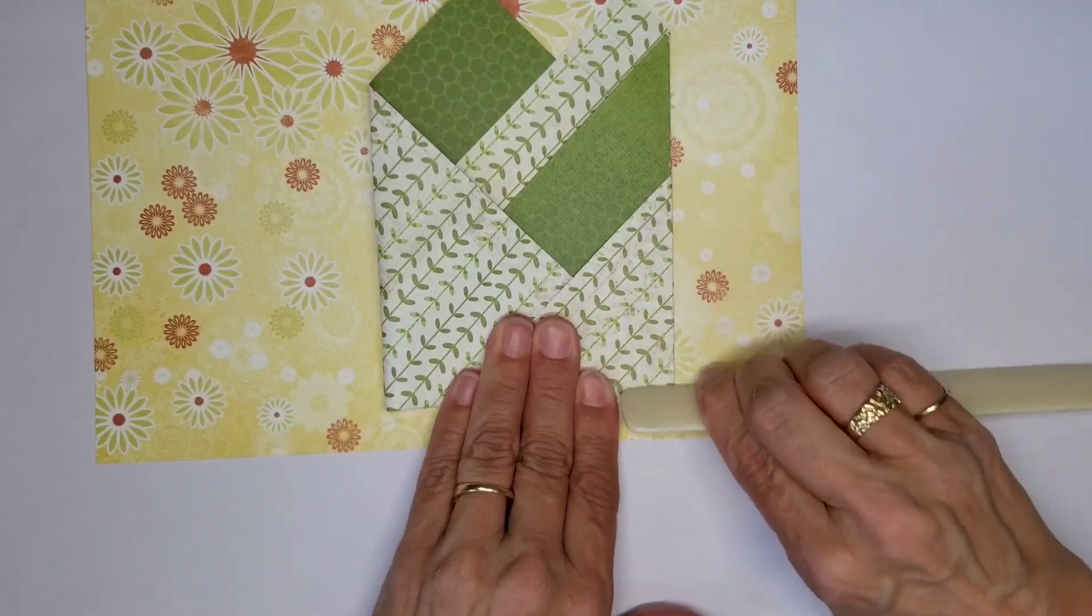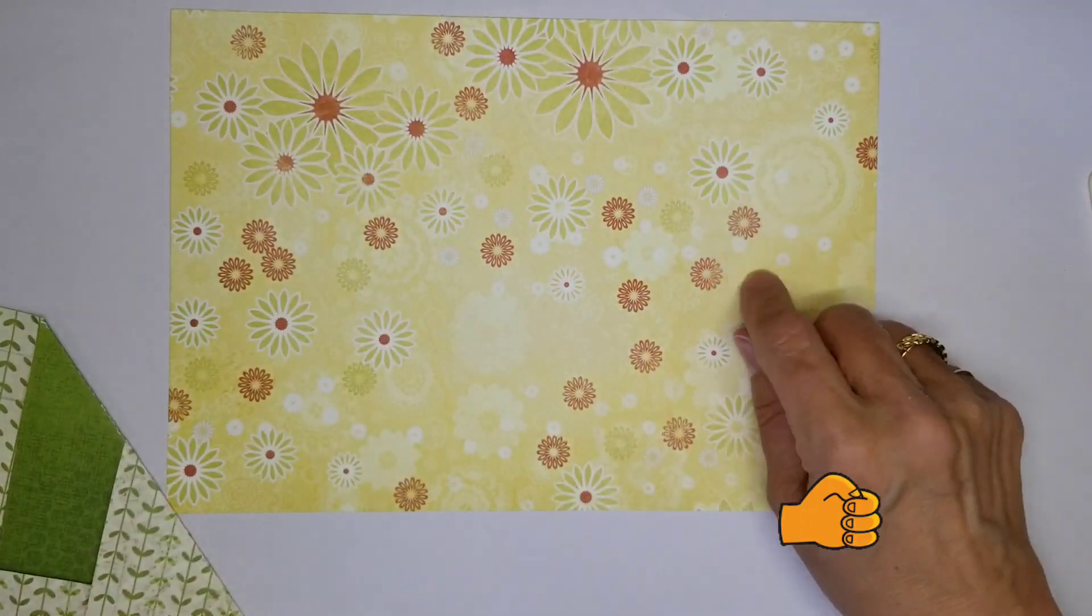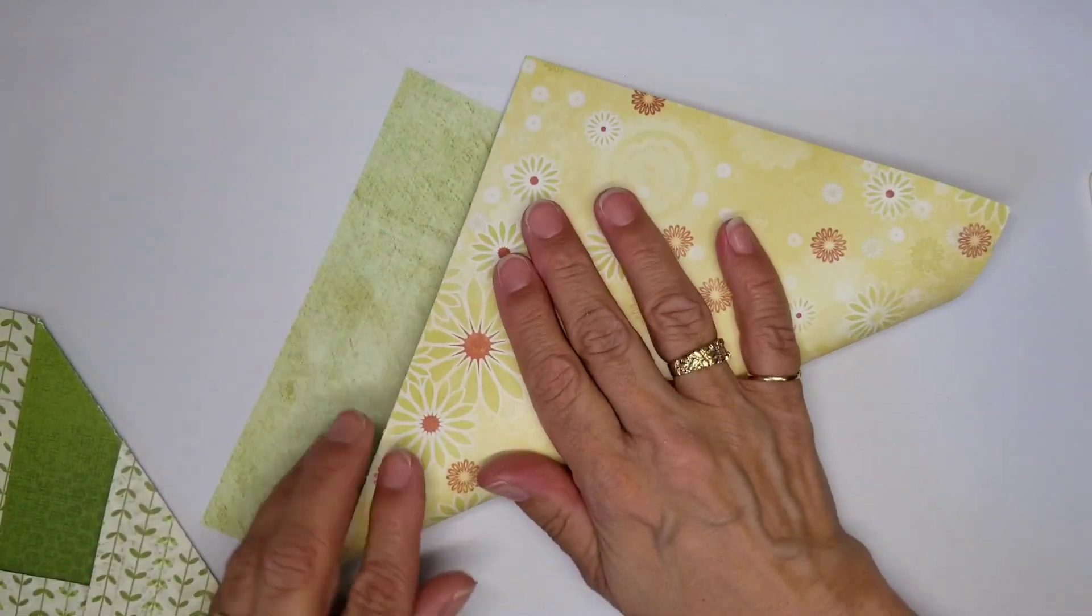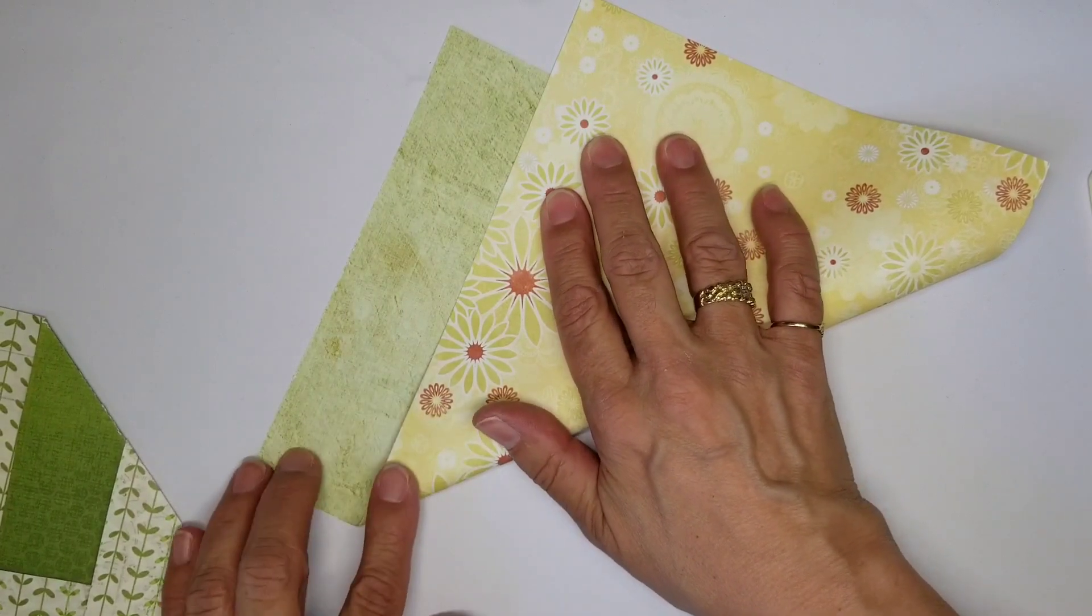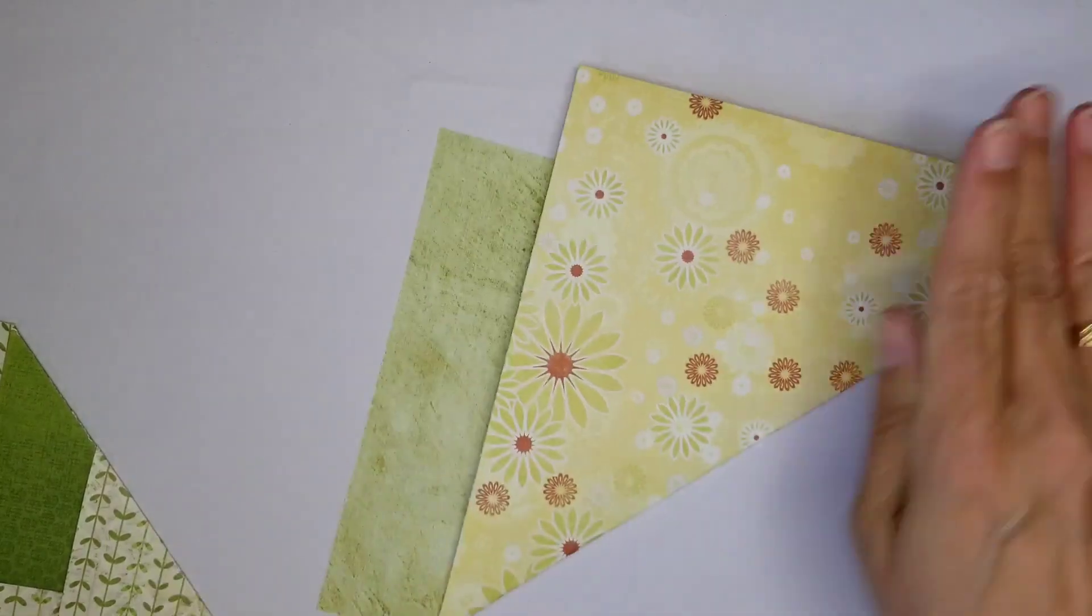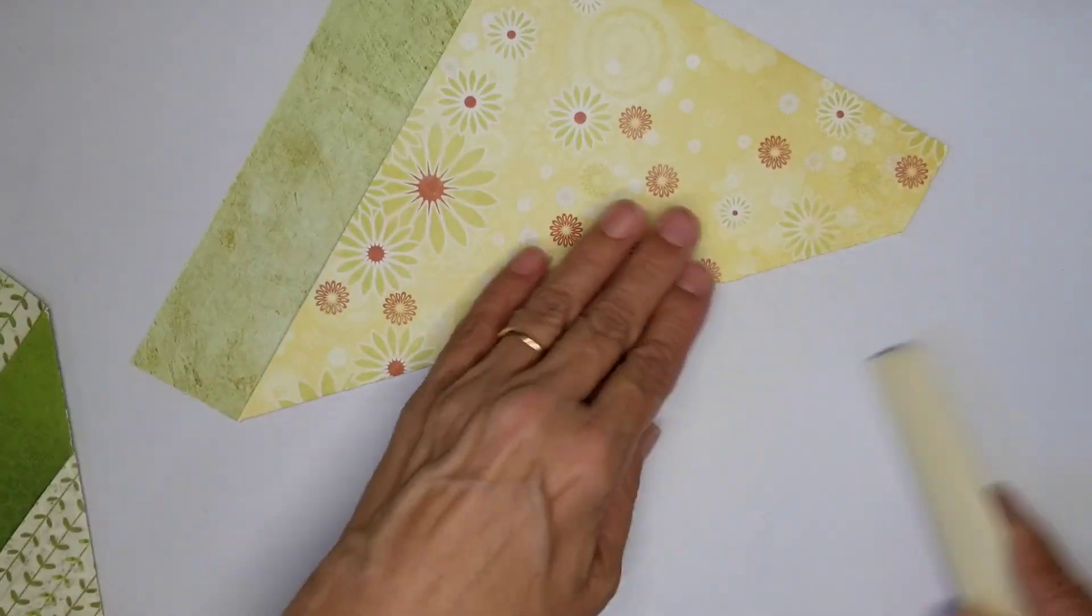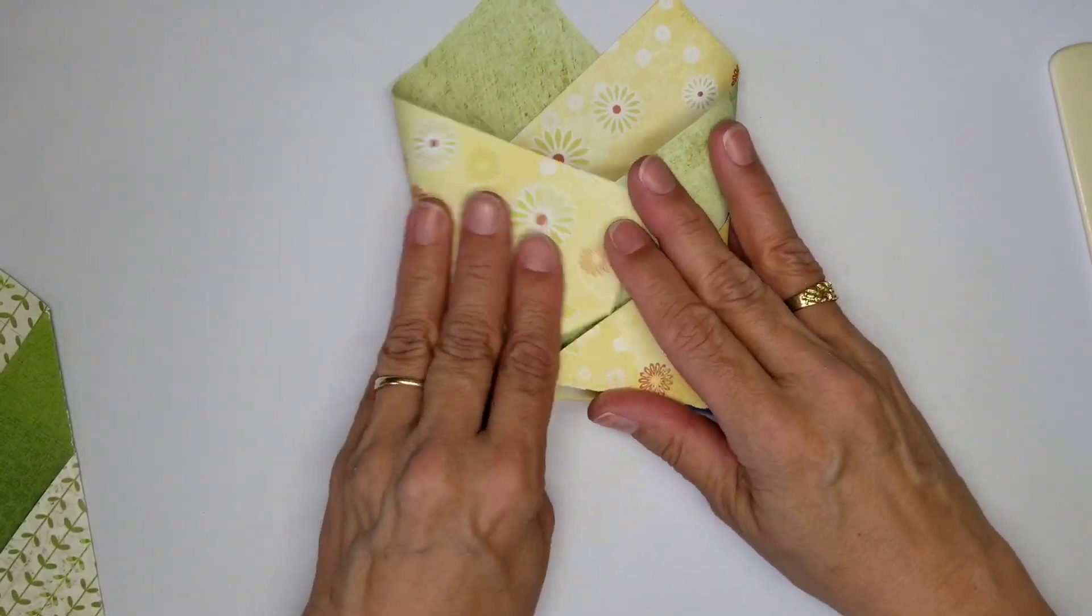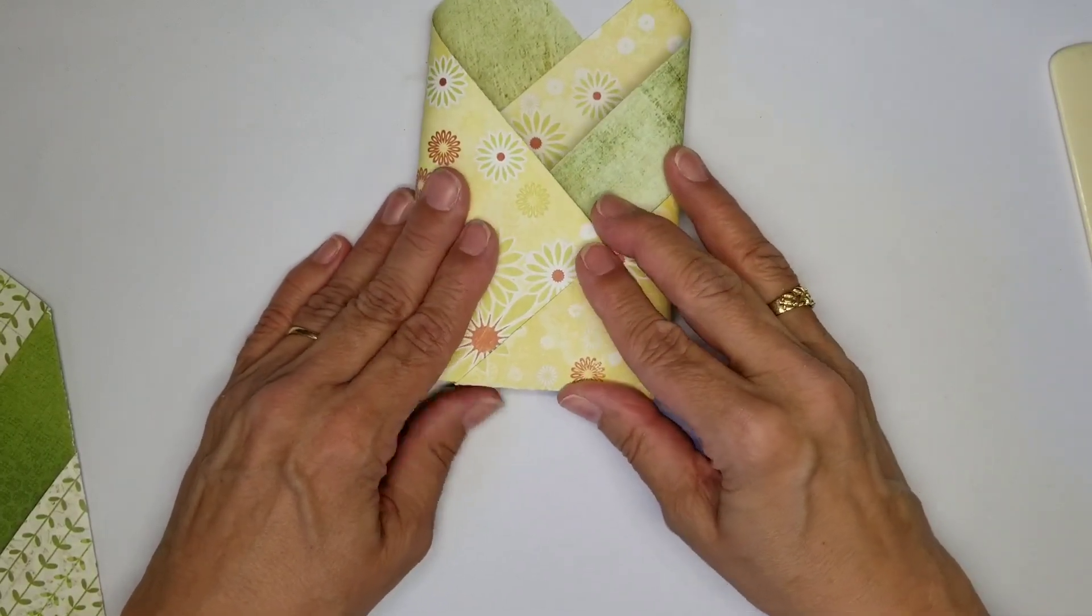Tuck this one in really good. Use the bone folder again. Then I'll do the same for this one. I love using double-sided paper for something like this. Gives a beautiful look inside. As you can tell, very easy pockets to make.